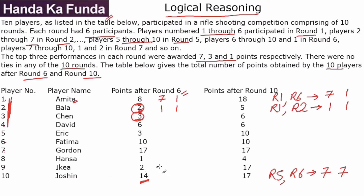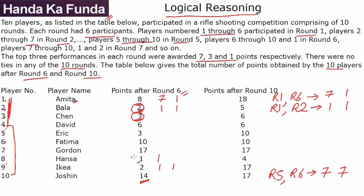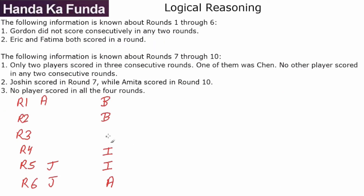Ikea has scored 2, so that must be 1 and 1. Hansa has scored 1, so that must be a single 1. Ikea is not in rounds 1, 2, or 3 — Ikea is in rounds 4, 5 and 6. But round 5 and 6 first positions are already occupied, so Ikea's 1 and 1 must have come in rounds 4 and 5. The only place left for Hansa to score a 1 is round 3. So we've now figured out the third-place finishers in all the first 6 rounds.